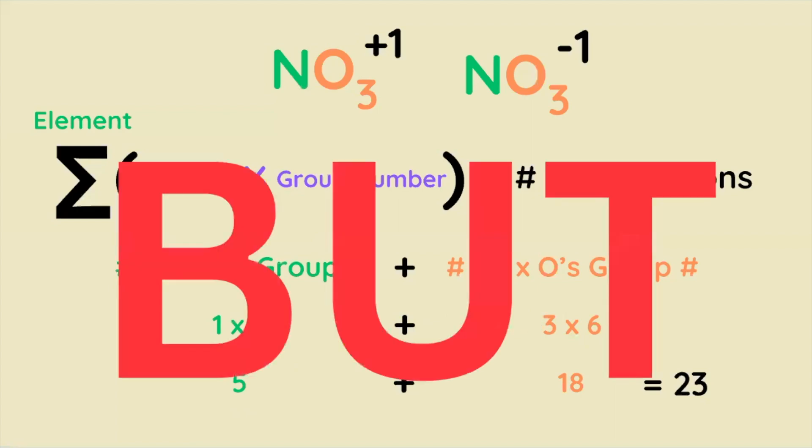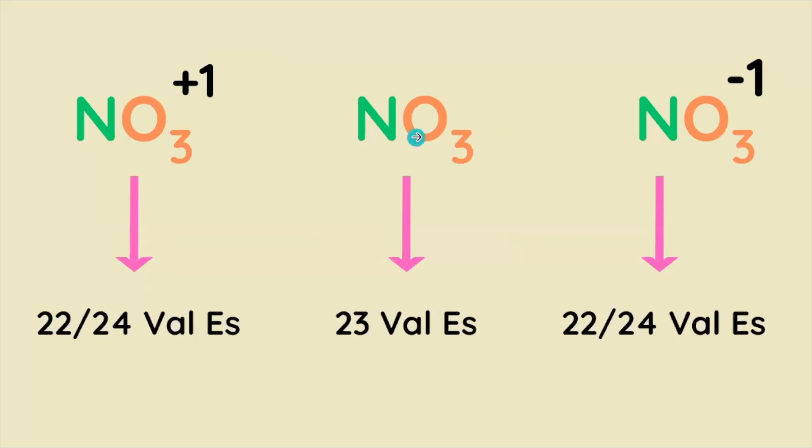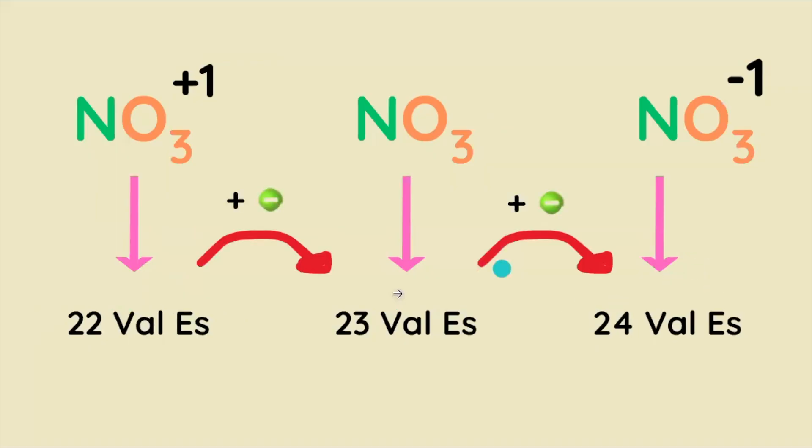However, we haven't addressed the charges of these molecules, NO3 plus, NO3 minus, and for clarity's sake, it's plus one and minus one, respectively. So if our summation equation tells us that NO3 without a charge is going to have 23 valence electrons, I can tell you that one of these is going to have 22 valence electrons, and the other one is going to have 24. But which is which? Well, it turns out that the negative charge means there are more valence electrons because an electron has a negative one charge.